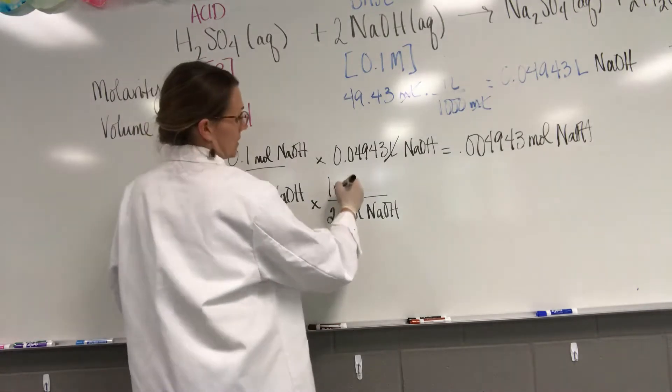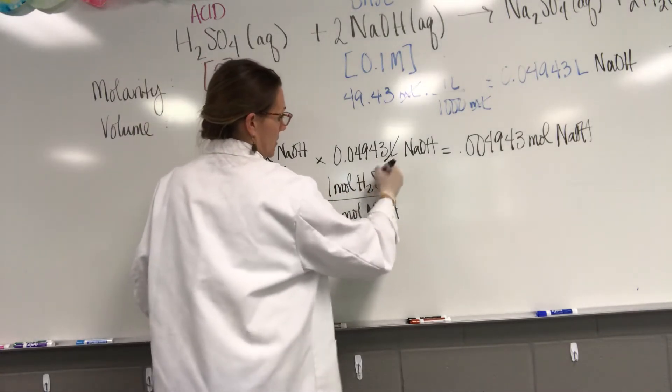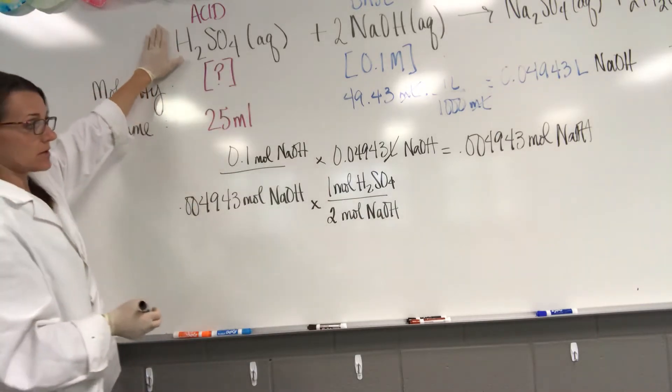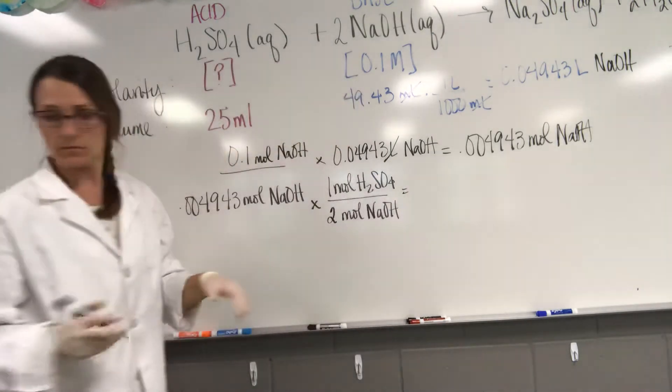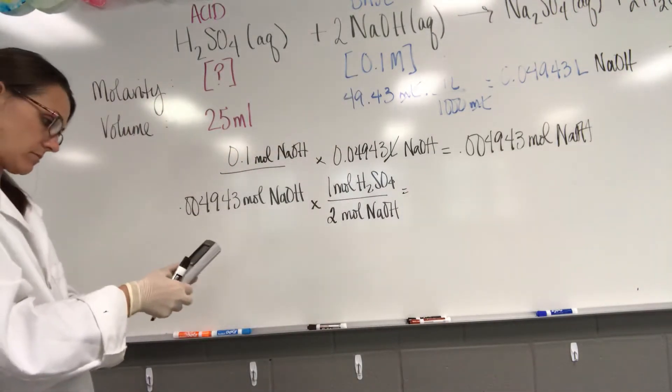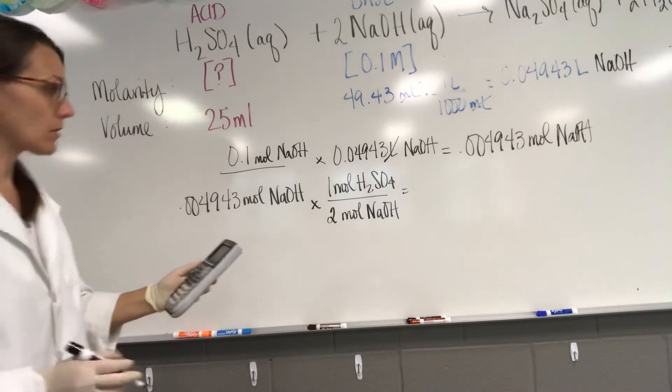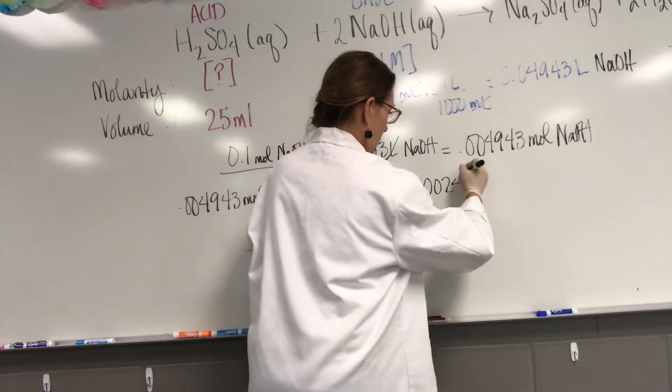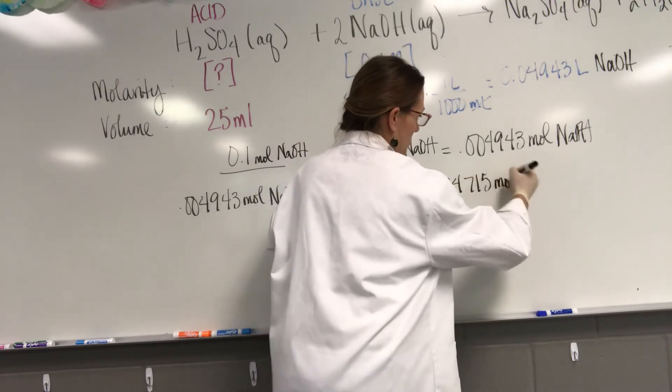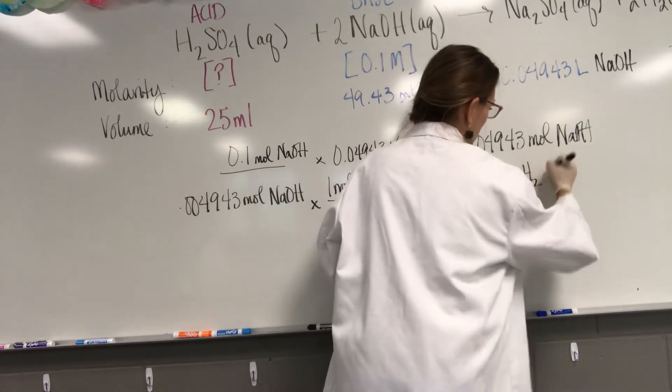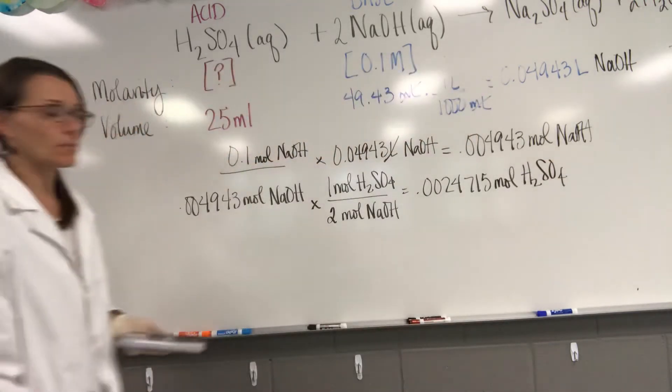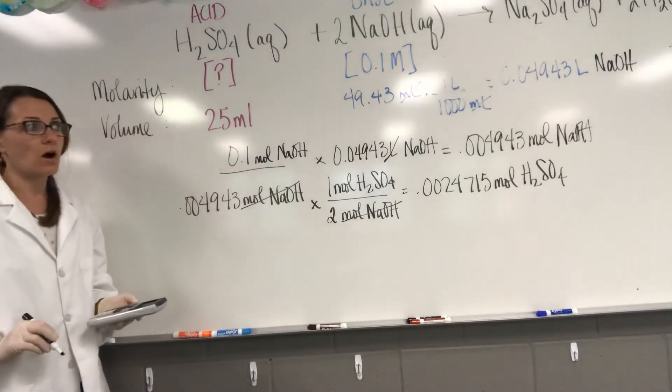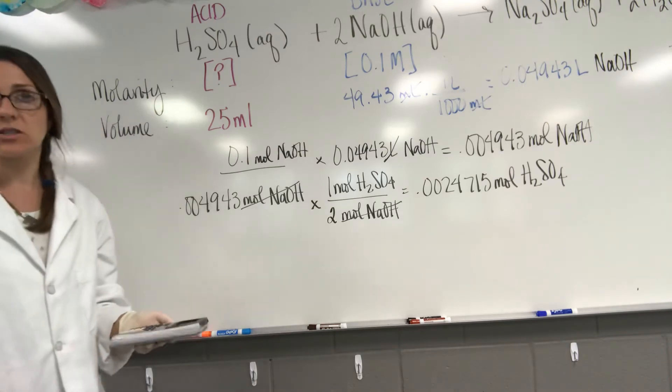And I'm getting that two from the coefficient from the balanced chemical equation, and one from the coefficient for sulfuric acid from the balanced chemical equation. So that means that we've got 0.0024715 mol of H2SO4. Mole sodium hydroxide canceled and we ended with mole of H2SO4.